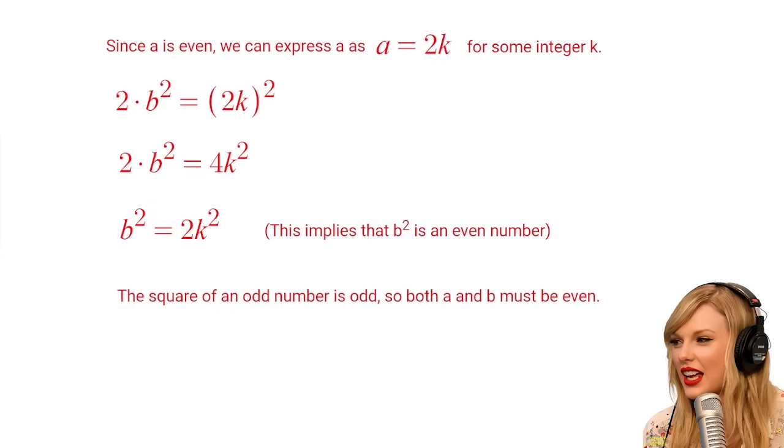Now, we have found that both A squared and B squared are even. But if B squared is even, then B must also be even, because the square of an odd number is odd.